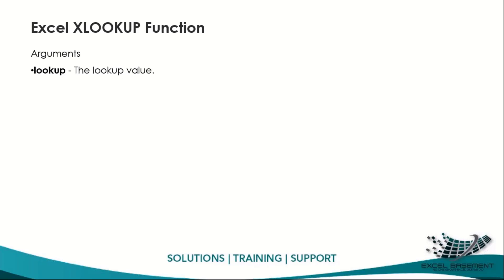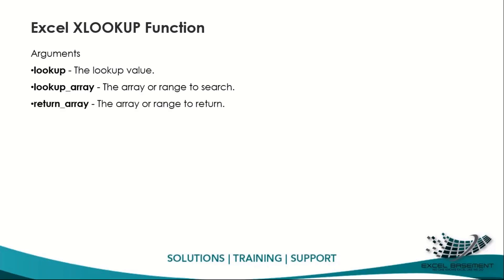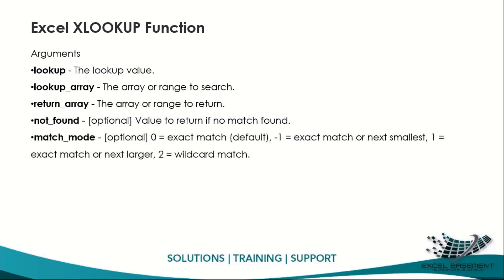The first argument is the lookup value. The second is the lookup array — the range of cells in which to search the criteria. The return array is the array or range to return as the result; you select only that specific column or row. Not found is optional — it specifies what value to return in the cell if no match is found.